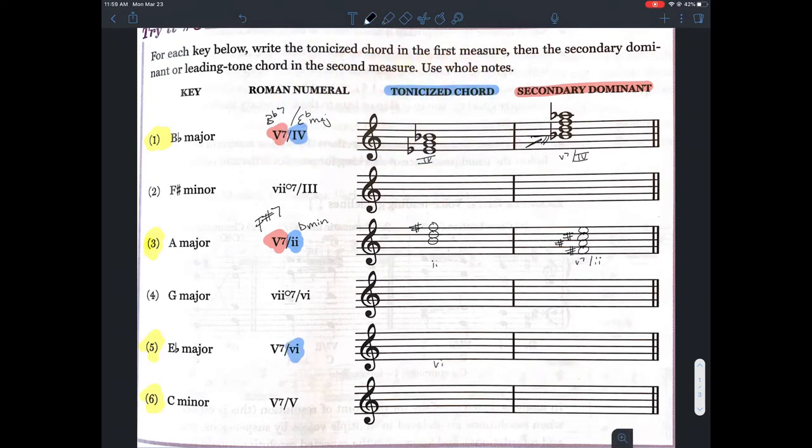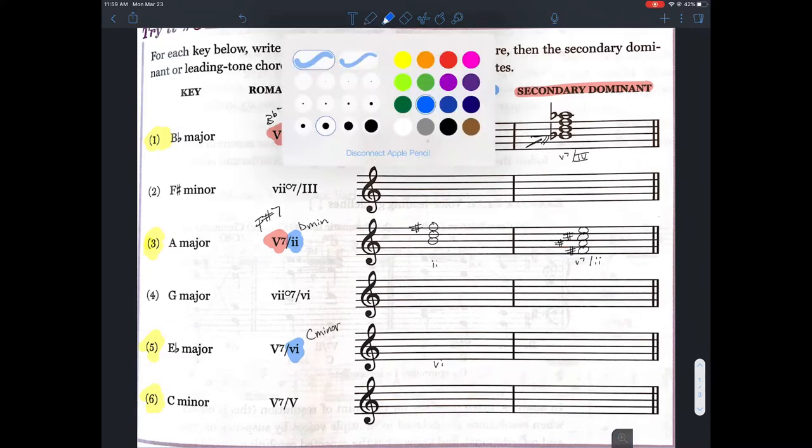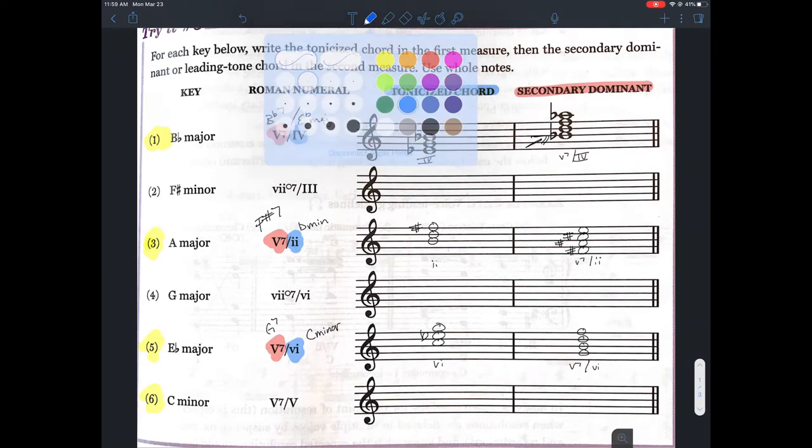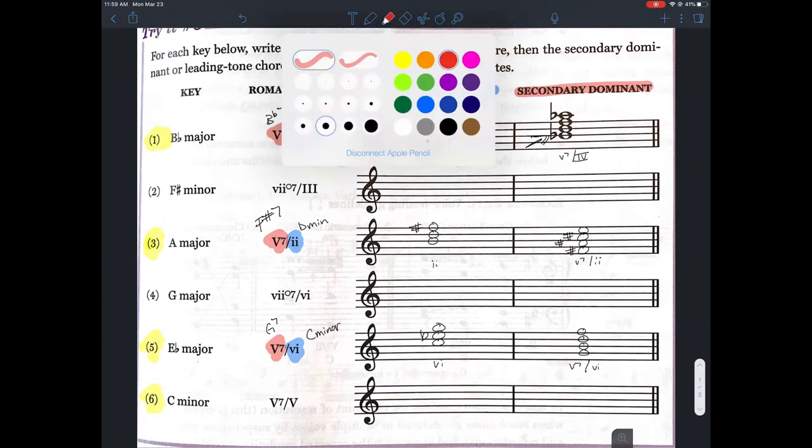Moving on, Eb major has C minor as its sixth chord, and the V7 of C minor is going to be G7. So let's write those out. C Eb G, G, B natural, D, and F. Pause the video here and see if you can do the next one on your own.